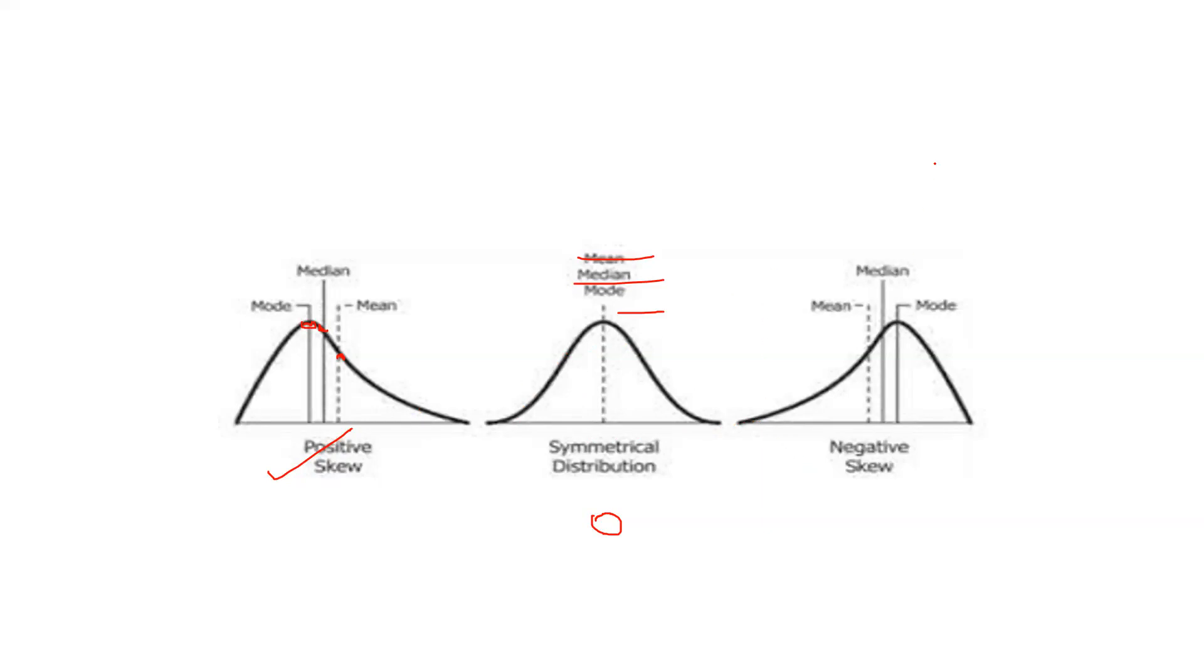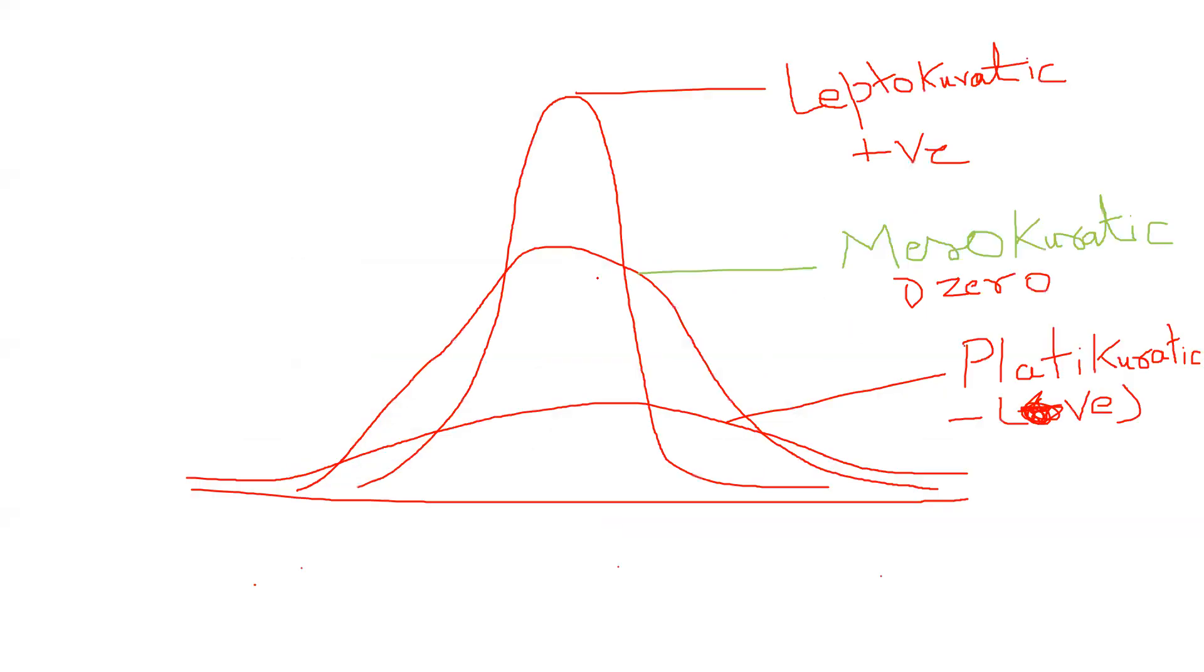And when we talk about negative skewness, you can see this is the flattened tail towards the negative side and mean, median and mode right. This is the reverse data.